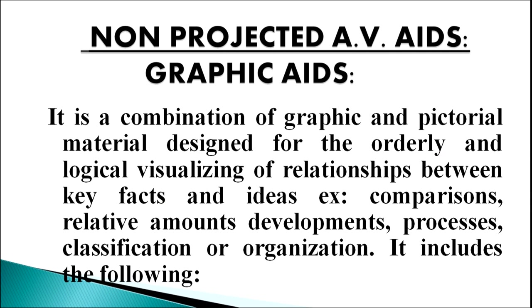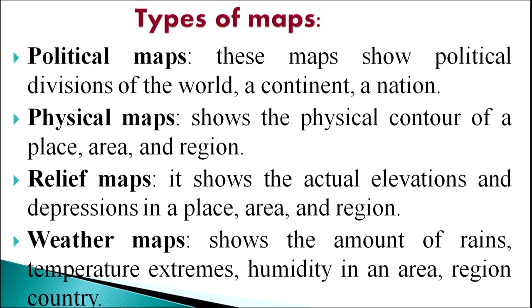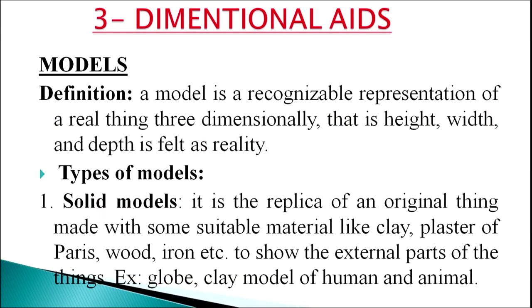Under non-projected aids, graphic aids are a combination of graphic and pictorial material designed for the orderly and logical visualizing of relationships between key facts and ideas — for example, comparisons, relative amounts, processes, classification, and organization. Graphic aids include charts, flashcards, posters, graphs, and maps. There are many types of maps: political, physical, relief, weather, picture or tourist, road, railway, air, and sea route maps. Three-dimensional aids include models, objects and specimens, display boards, and chalkboard.